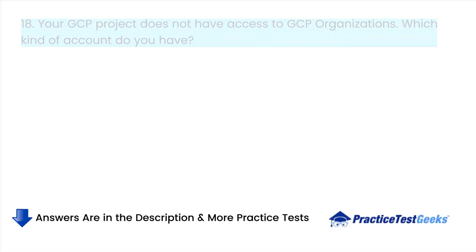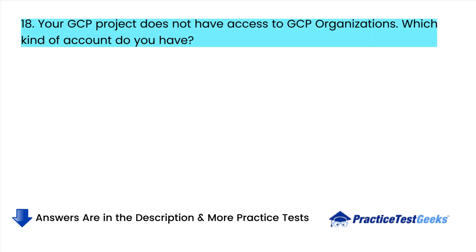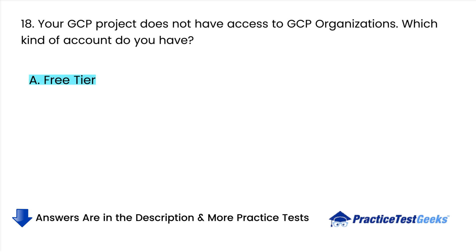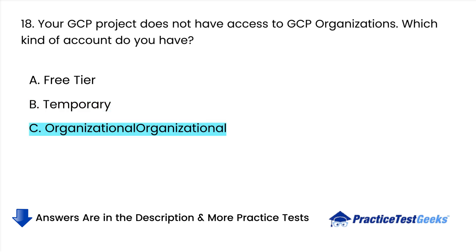Your GCP project does not have access to GCP organizations. Which kind of account do you have? A. Free tier. B. Temporary. C. Organizational. D. Local.